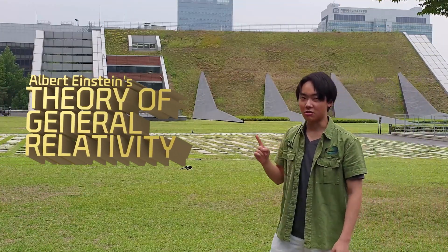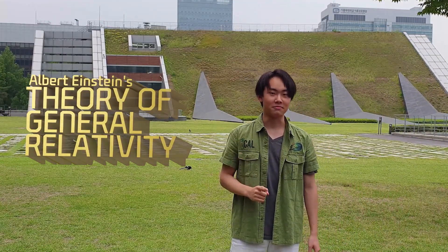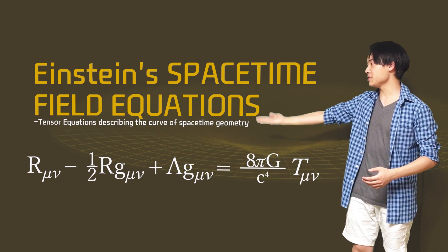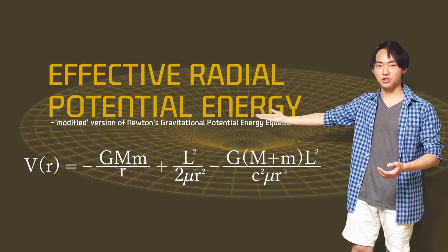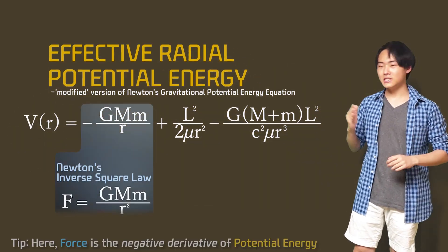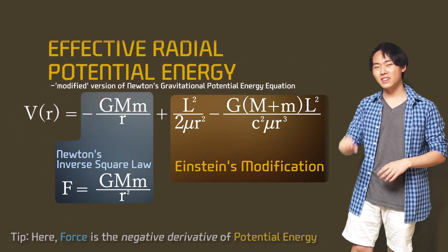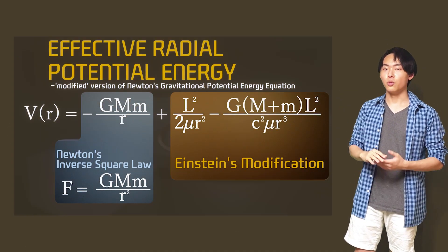But Einstein's general relativity solves this problem. Einstein used his space-time field equations and simplified them into effective radial potential energy, which is similar to Newton's inverse square law, but with a little modification.